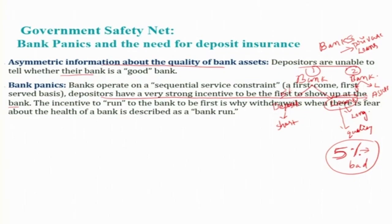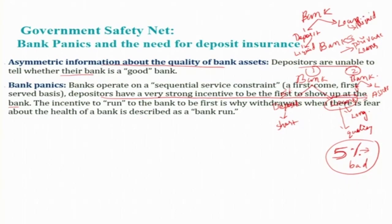If everyone runs to the bank, the problem is clear: deposits are the most liquid item — they can be withdrawn at any time. But loans are illiquid — loan agreements are made for 1 year, 5 years, 10 years, 20 years, 30 years. The money collected from the public is already given out as loans, and it cannot be called back immediately. Because of this, there will not be enough money to repay all depositors at once.